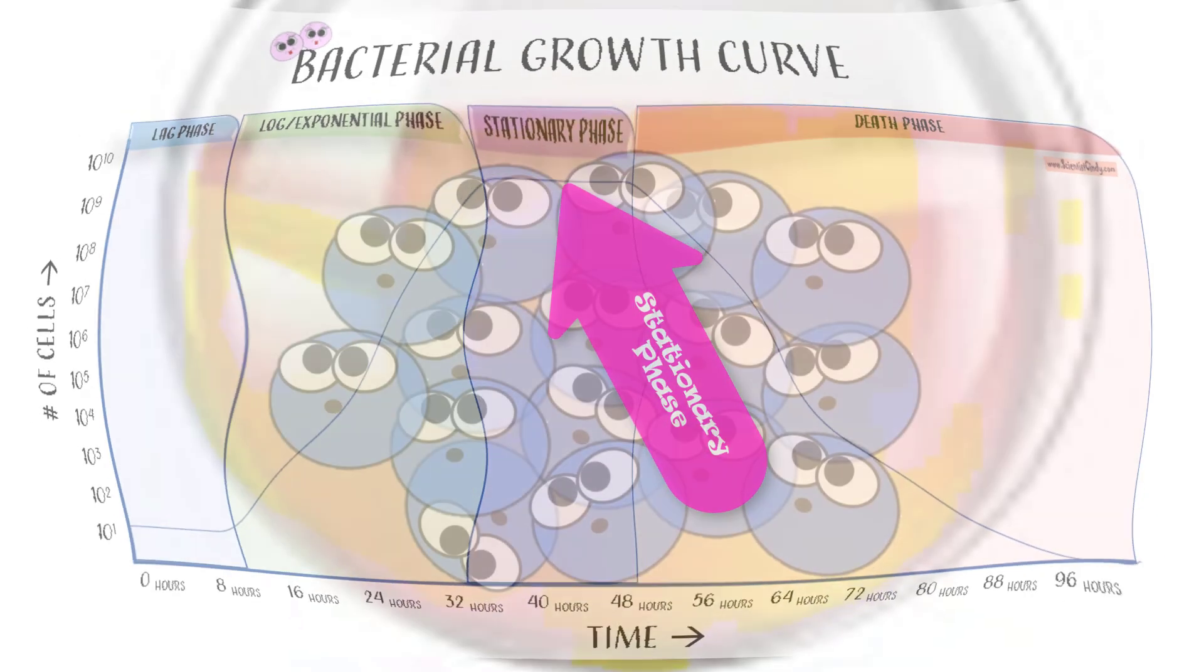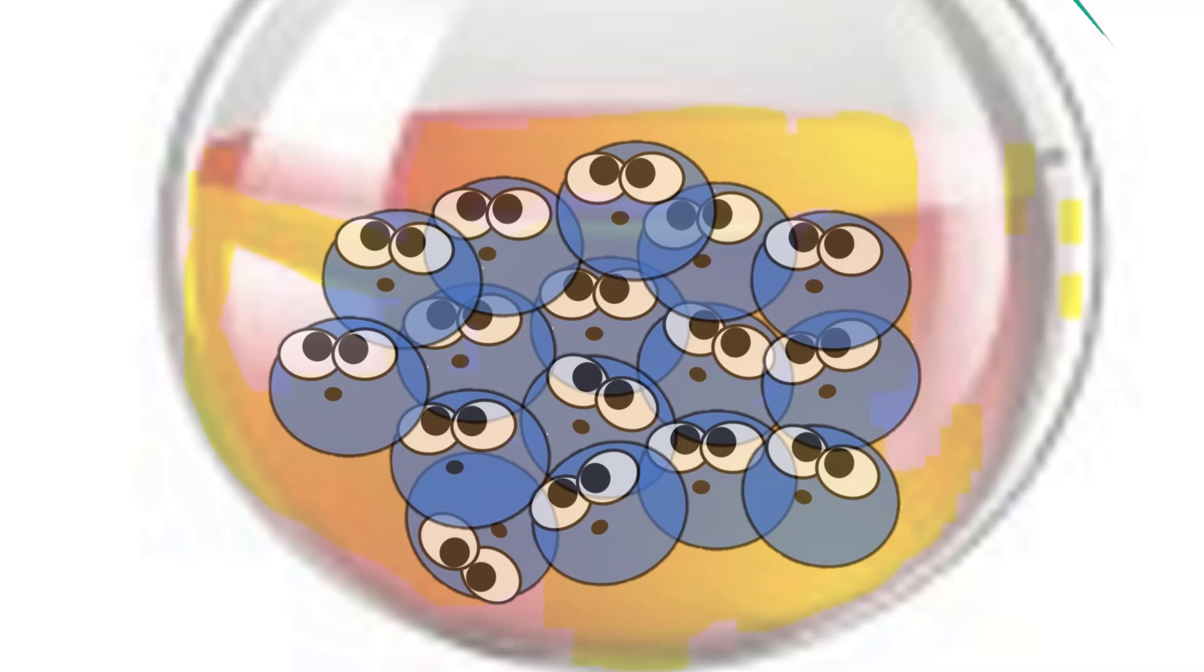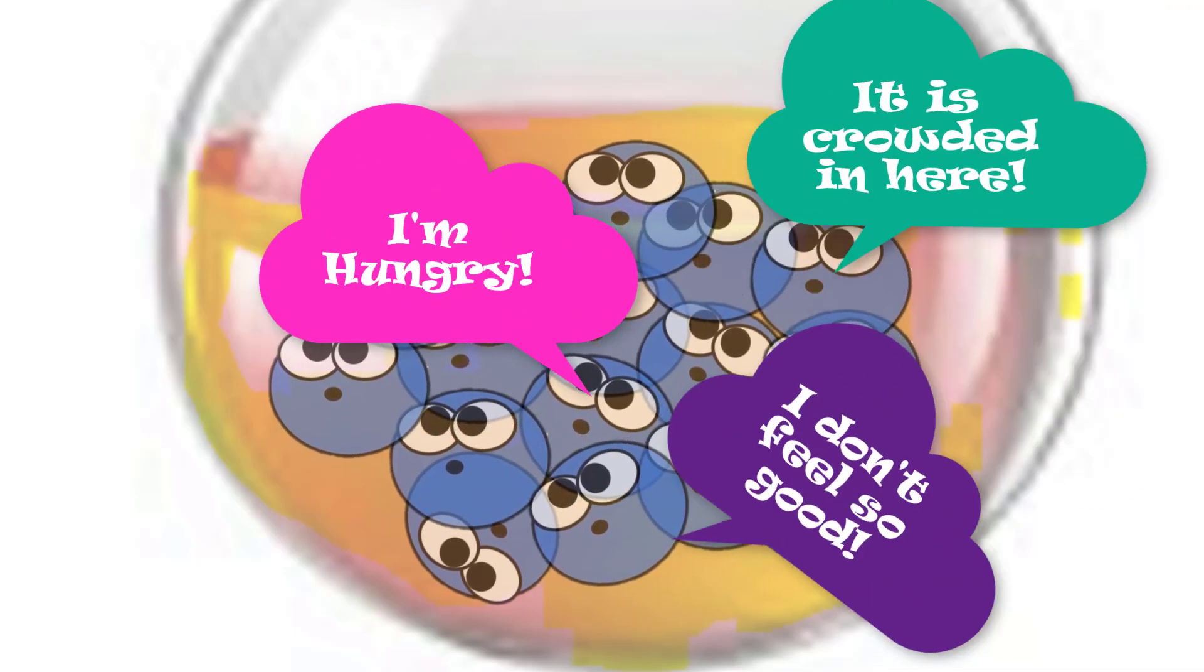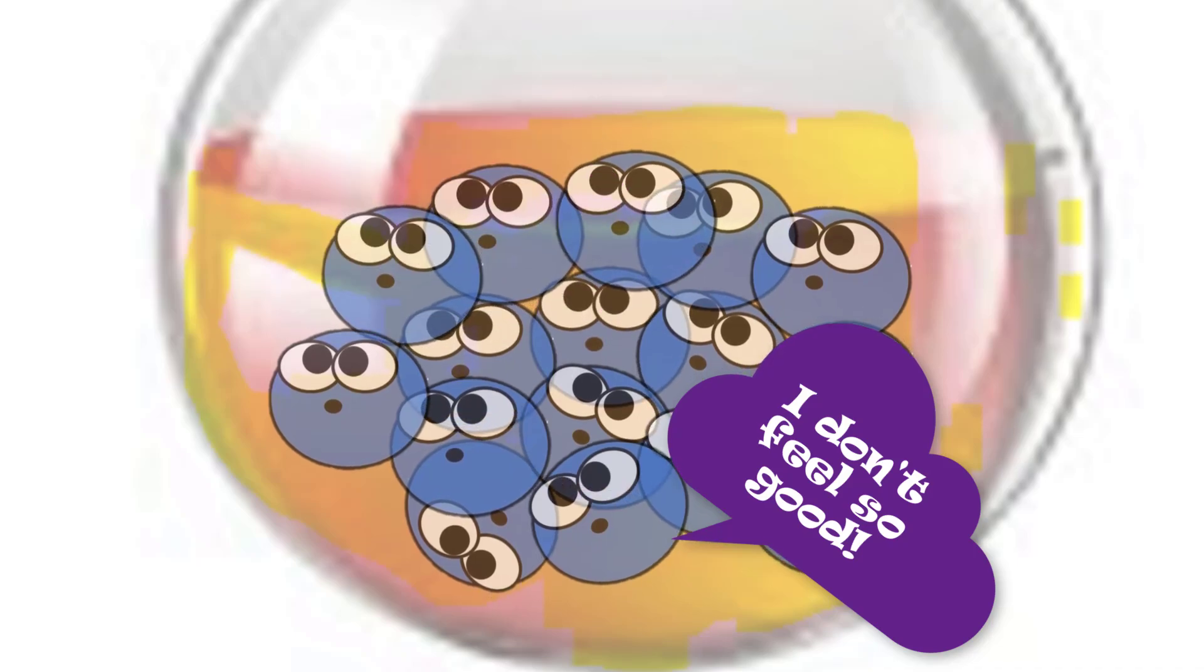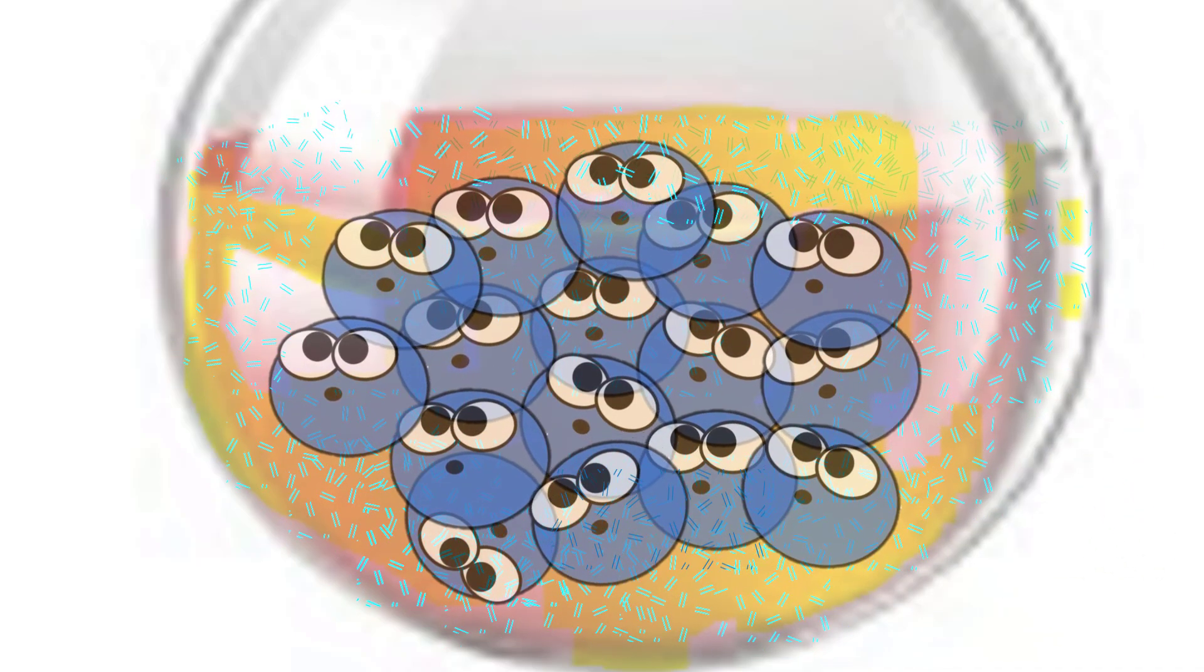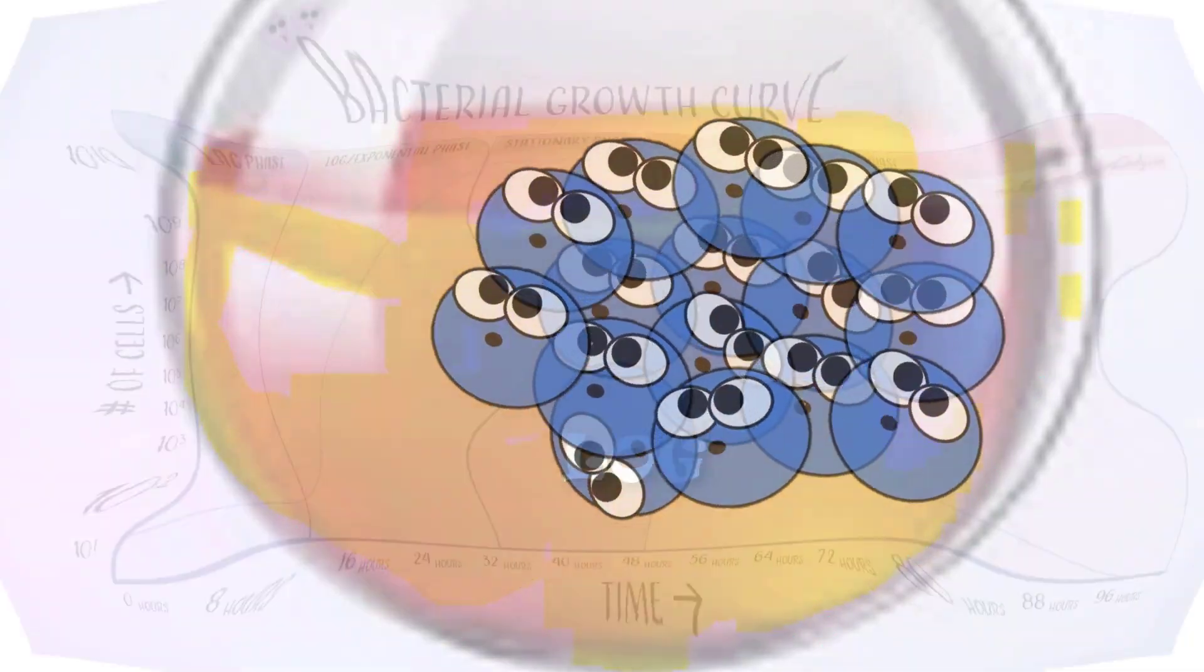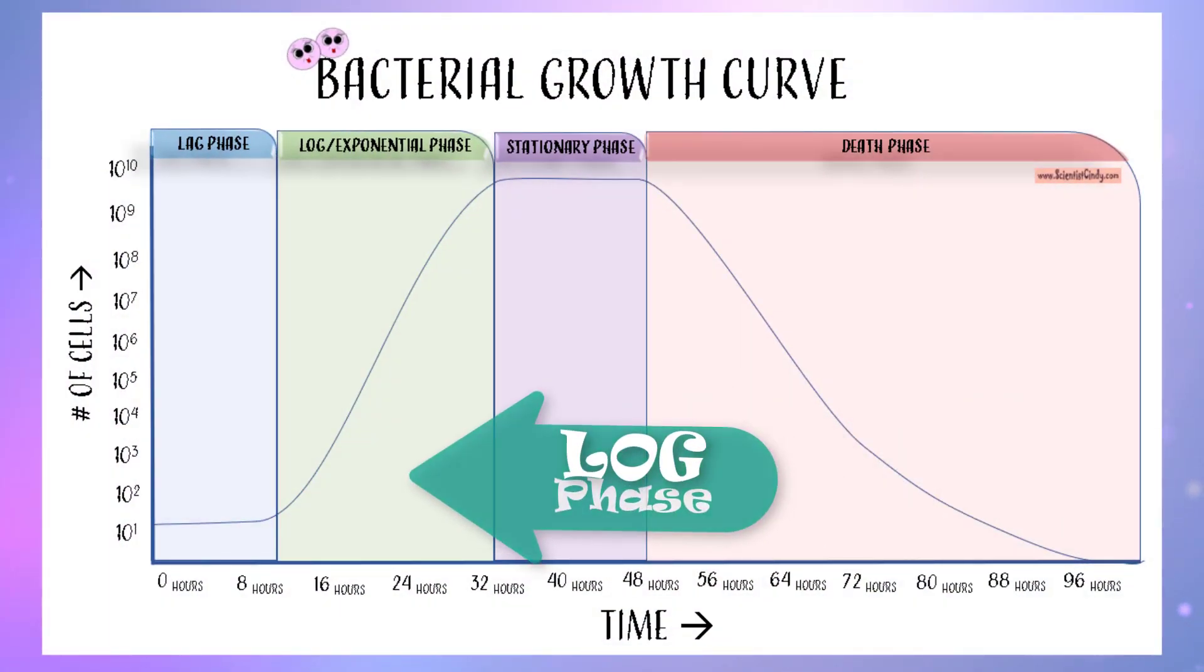This leveling off is due to the population of bacteria beginning to run out of available space and available nutrients. Also, the cells will experience a continued buildup of toxins. Due to these factors, the log or exponential phase will give way to the stationary phase.